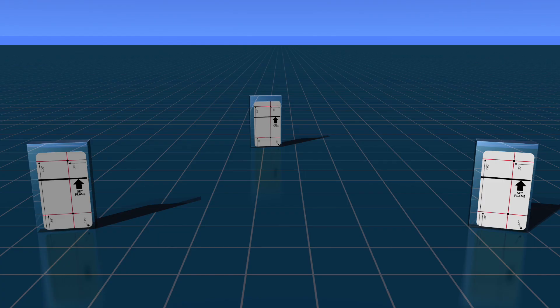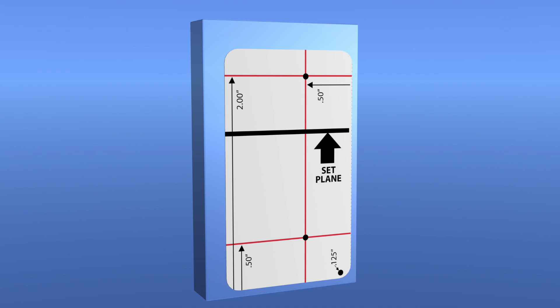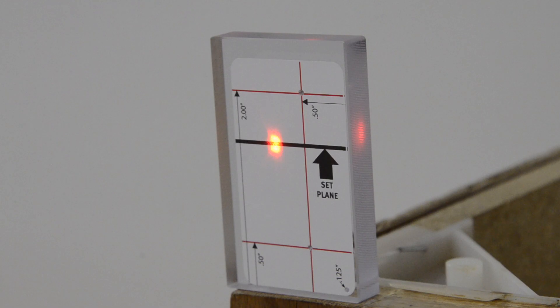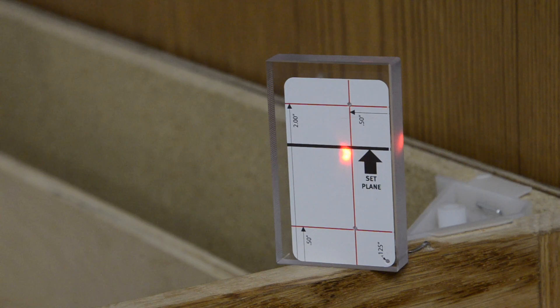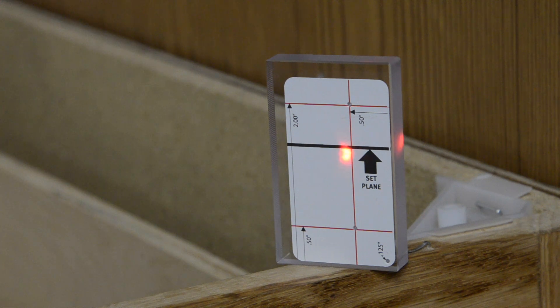It's very important to set the plane by shooting the pin targets in the correct order: left, right, then back. On each pin block, there is a bold black line with an arrow pointing at it that says Set Plane. Aim the laser onto the black line and take the measurements by tapping anywhere on the screen.